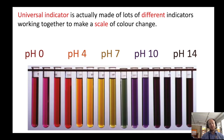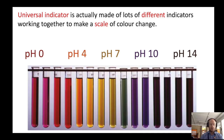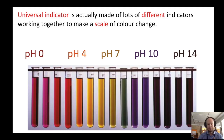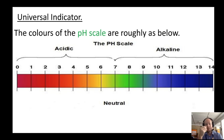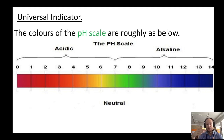In the lab we tend to use universal indicator. This is actually made of lots of different indicators that work together so that we get a scale of color changes, going from deep red all the way to a very dark purple with a lot of change in between. The rough colors of the pH scale go from red through to orange, yellow, green, turquoise, blue, and eventually violet.